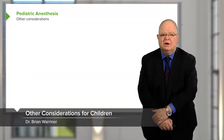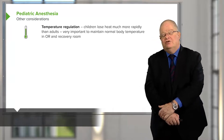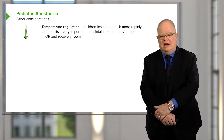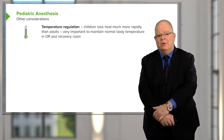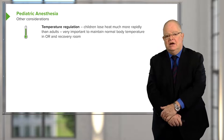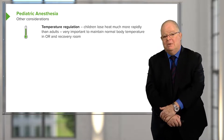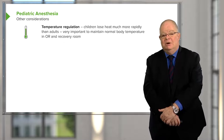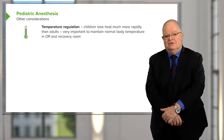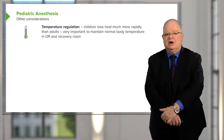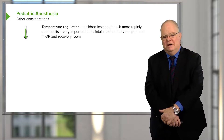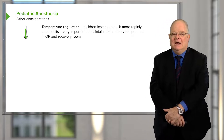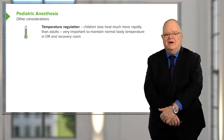Other considerations in pediatric anesthesia include temperature regulation. Children lose heat much more rapidly than adults, and small children have trouble producing it. Newborns use something called brown fat to generate heat, whereas older individuals generate heat through muscle activity. Temperature regulation is critical because children do very poorly if hypothermic. Pediatric operating rooms are kept very warm — uncomfortably so — specifically to prevent heat loss.